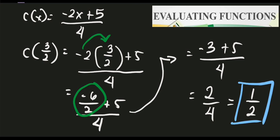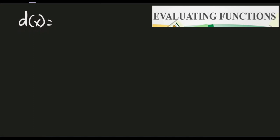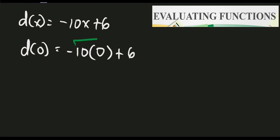Same procedure — just replace the value of x with the given input. Let's solve example D: d of x equals negative 10x plus 6. We want to evaluate this with x equals 0. It gives us negative 10 times 0 plus 6. Negative 10 times 0 is automatically 0, plus 6, so the answer is positive 6.